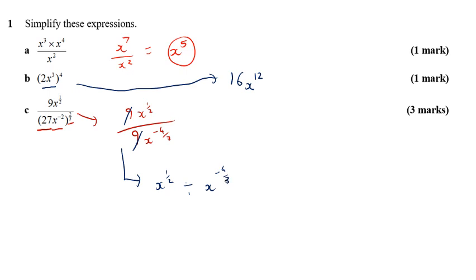Now, when we are dividing, we subtract the indices. So effectively, what we need to do here is 1 half take away negative 4 thirds.